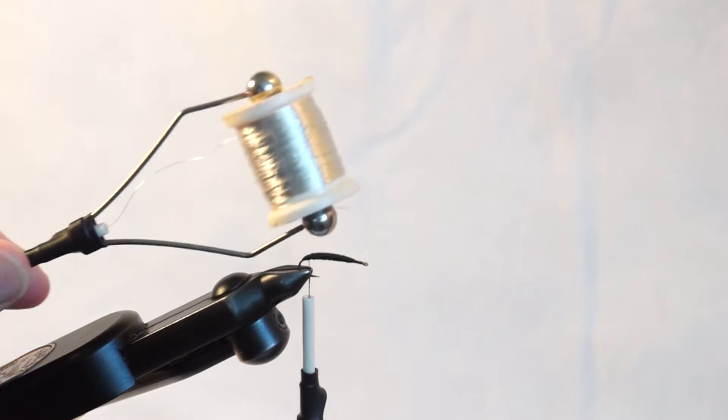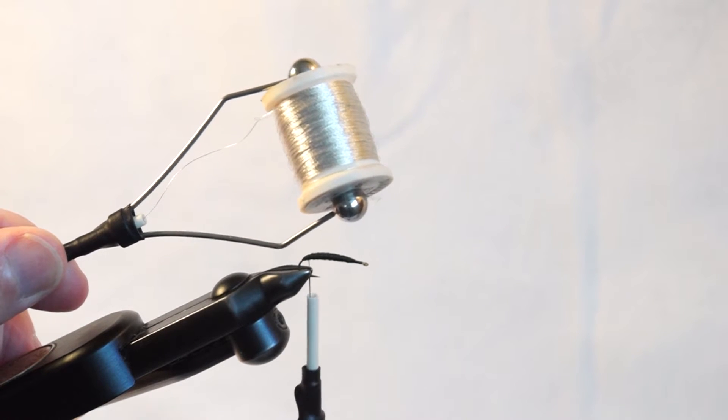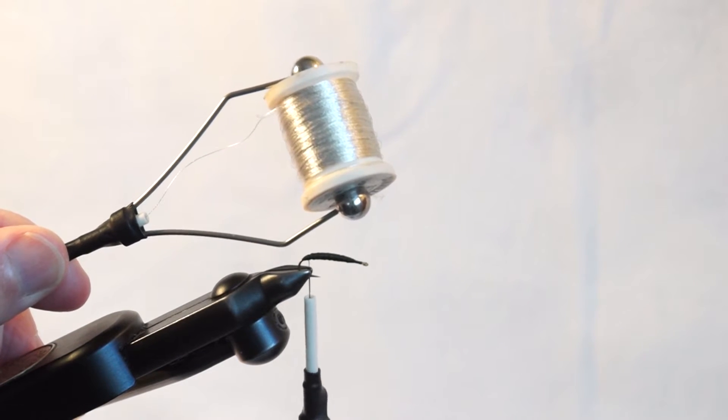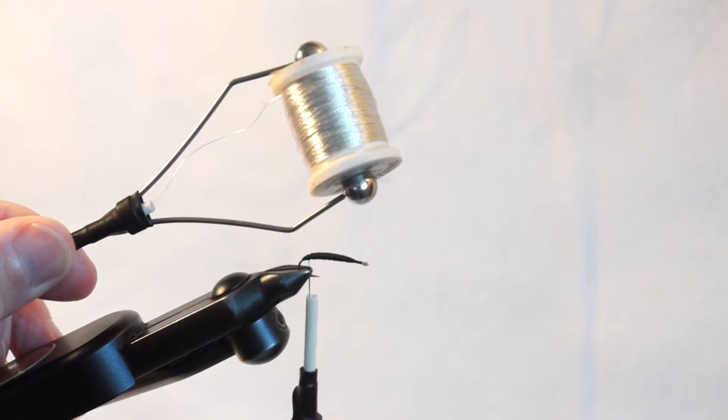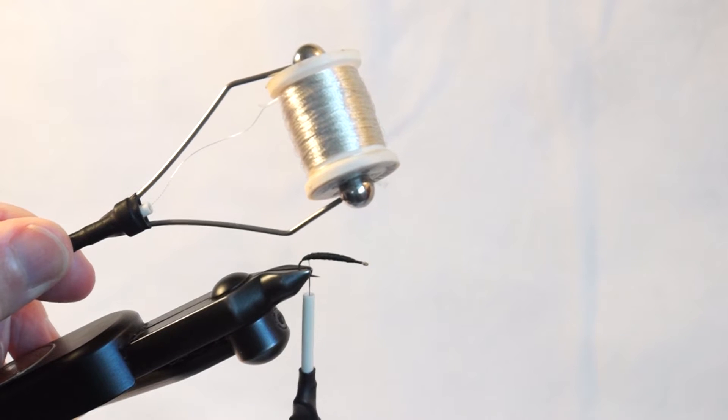Another thing that's helpful is to use extra bobbins for your ribbing material and so forth, especially if you're using thread. I'll show you how this works.